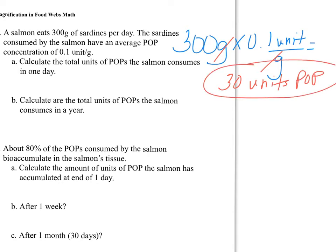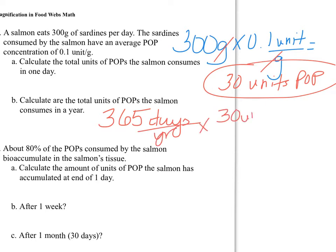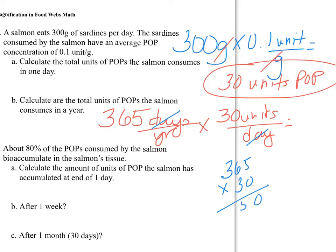For part B, calculate the total units of POPs the salmon consumes in a year. Take the answer from part A and multiply by days per year: 365 days per year times 30 units per day. The days cancel, and doing the math gives us 10,950 units of POP per year.